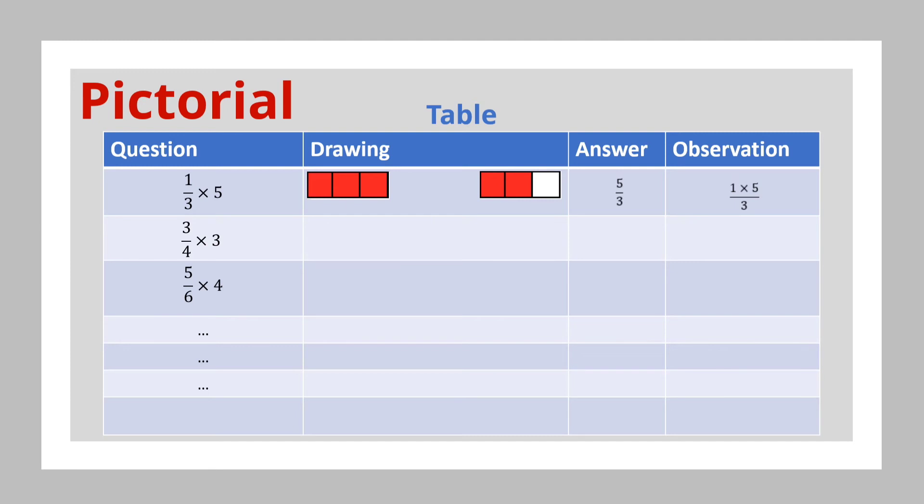Similarly, three quarters times three will be the drawing of one bar and dividing the bar into four equal parts. And after dividing it into four equal parts, we shade three of the four parts. Here are the four equal parts, and here are three parts that were shaded. This is equivalent to three quarters.